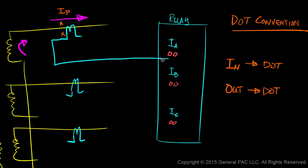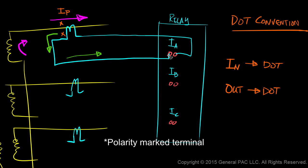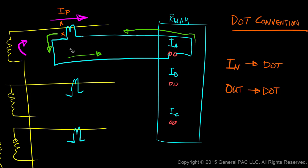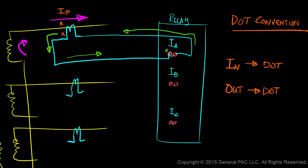Let's connect our CT this particular way. Primary current flows into the dot on the primary side, so secondary current must flow out of the dot on the secondary side. Secondary current flows through this polarity mark here, comes out of this polarity mark, and creates this circulating current. Because there's a dot on this side, we would expect that this contact on the relay is the polarity side of that contact. These two sides should match up.